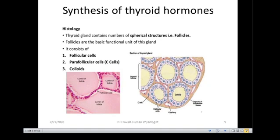Within the follicle there are follicular cells — this is where synthesis of thyroid hormone takes place. After synthesis, the thyroid hormones are stored in the colloid. When they are needed, they move back into the follicular cells and are released into circulation. The C cells in the thyroid synthesize calcitonin, which we will discuss later.